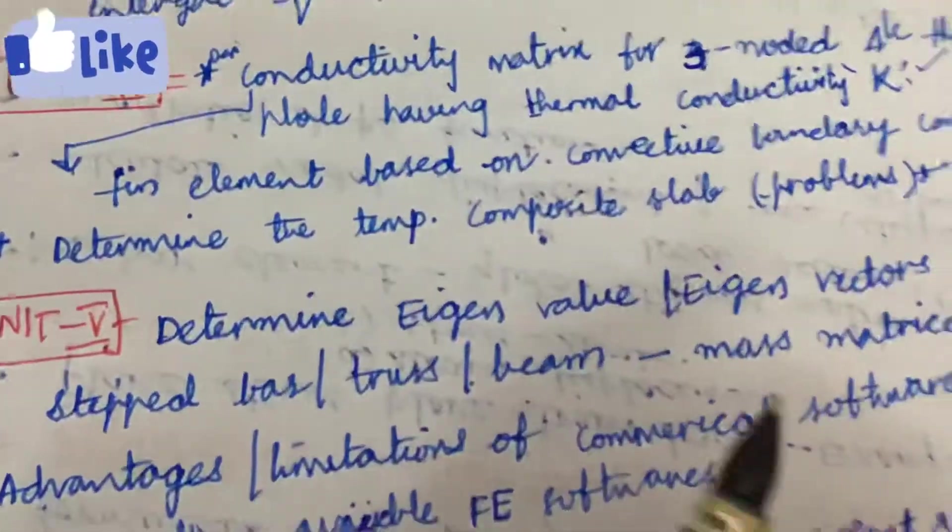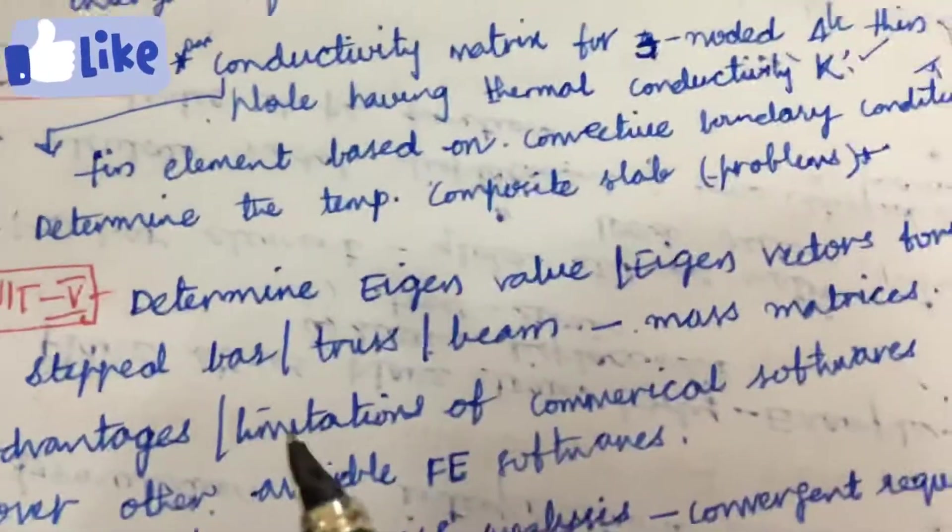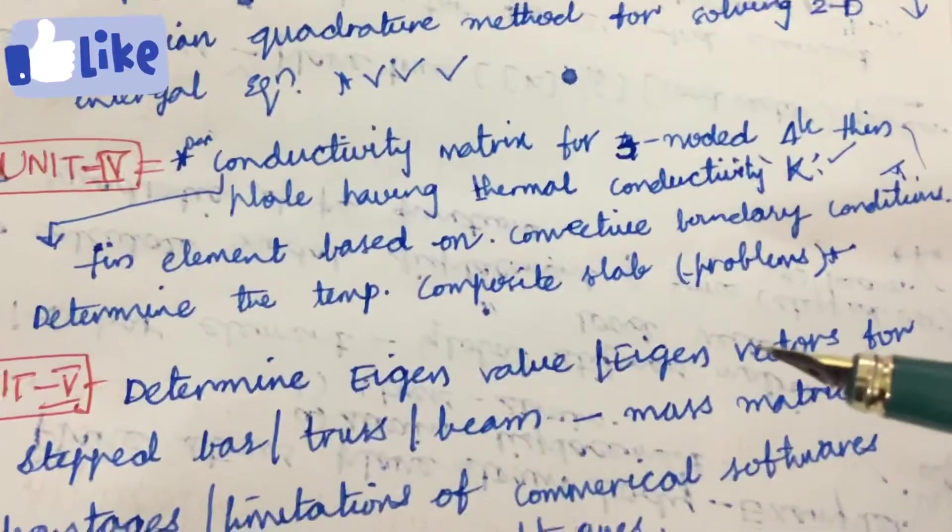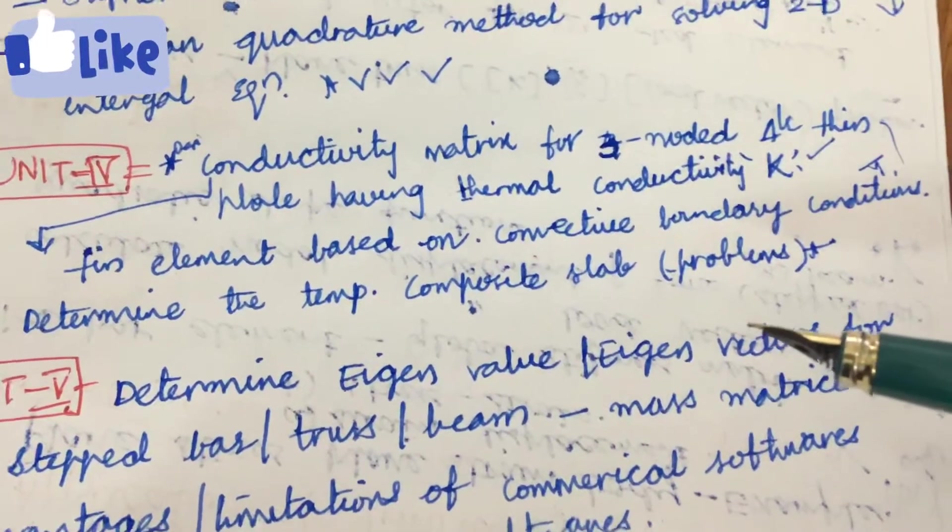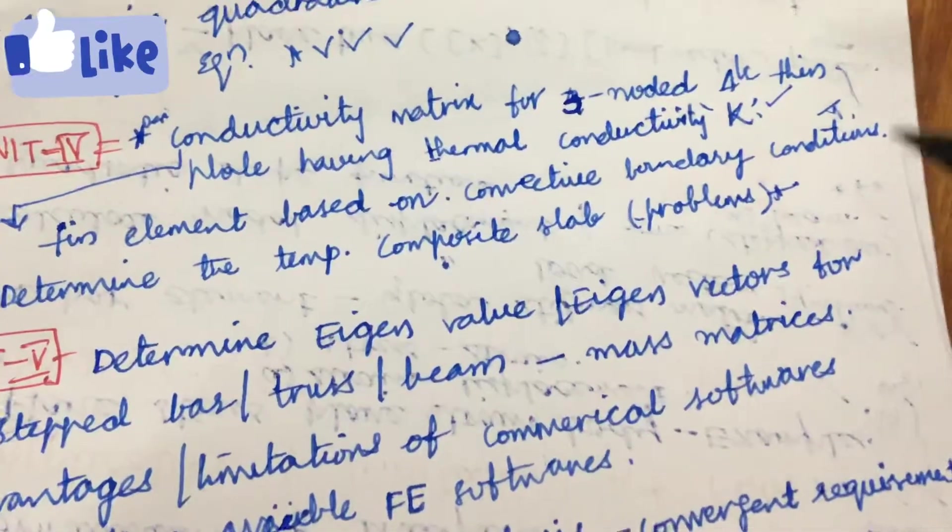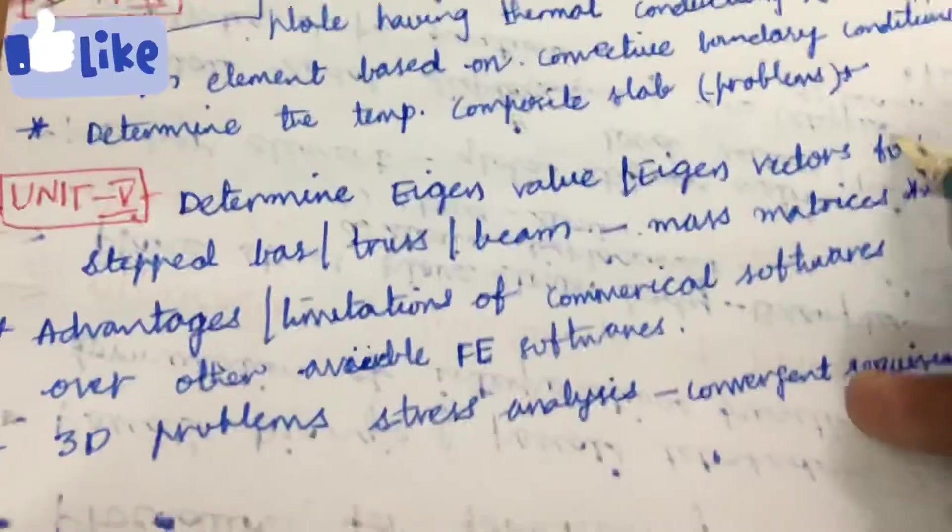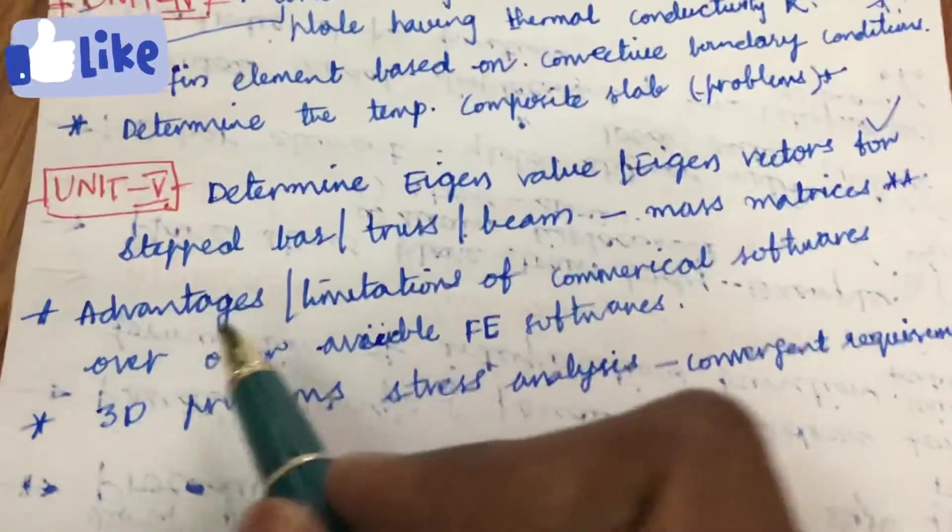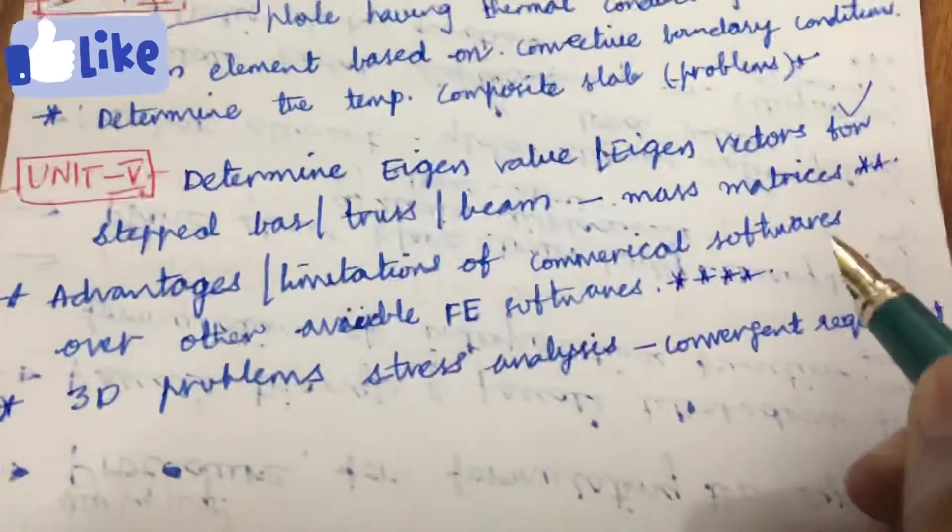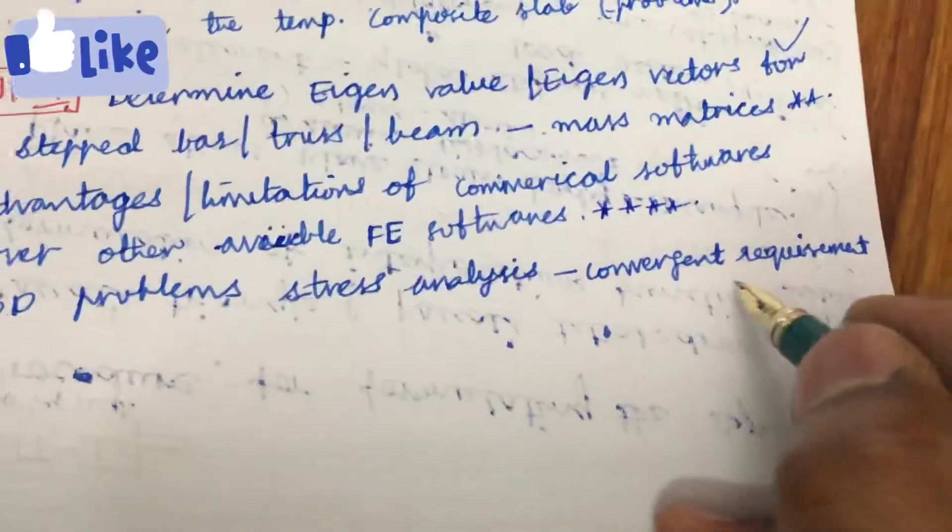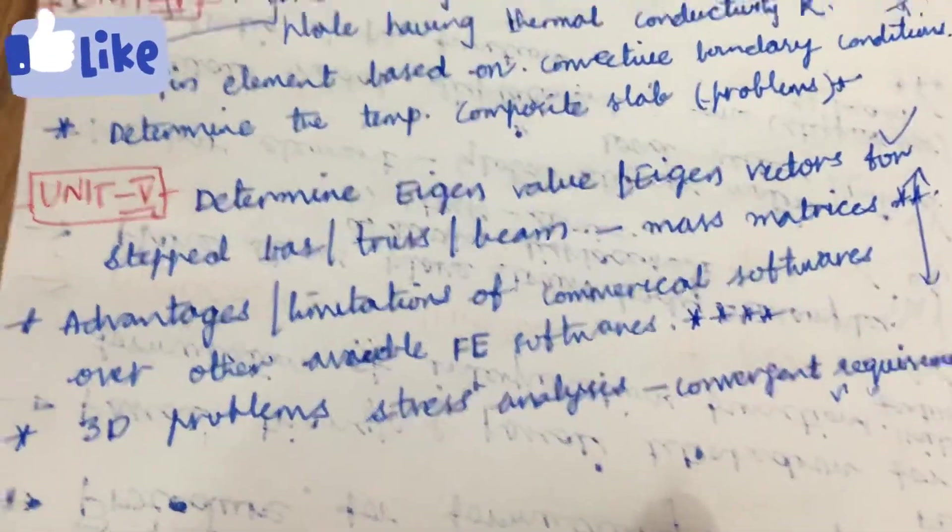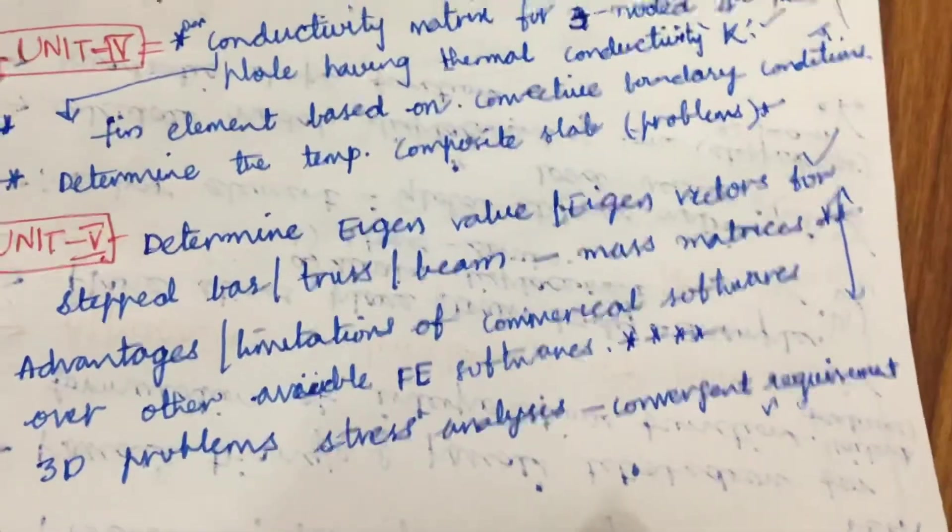Later, the fifth unit is all about the eigenvalues and eigenvectors applying on a stepped bar, truss, as well as beam, and calculating the mass matrix. If you are perfect with the earlier units, then only you could be able to work out the fifth unit. Why? Because you should have minimum knowledge on bars, trusses, as well as beams, then only you can insert the values of eigenvalues, eigenvectors, as well as mass matrix calculation is very important. We can expect these to be a sure question, as well as the advantages and limitations of commercial softwares over other available softwares. If it is asked for eight marks, this is a sure question. Later, 3D problem stress analysis and its convergent requirement is also asked sometimes, but these two questions can be expected to be sure questions from Unit 5.